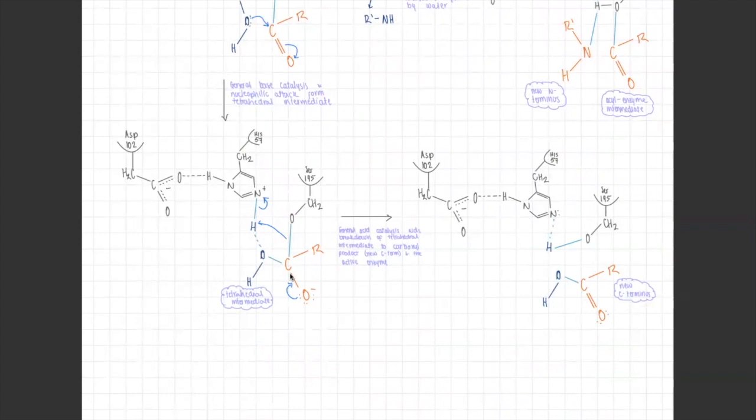Then another general acid catalysis breaks down this tetrahedral intermediate into the carboxyl product — the new C-terminus from the protease cleavage — and the active enzyme again. The serine is once again protonated. Serine proteases include chymotrypsin and trypsin, and you can see their specific binding pockets in the lecture slides as well.